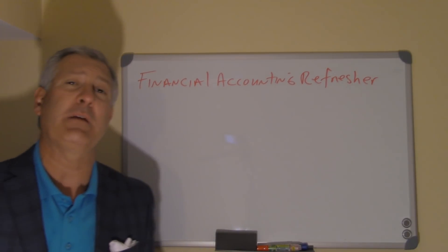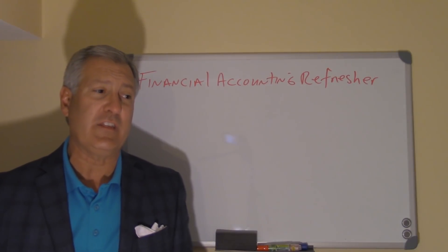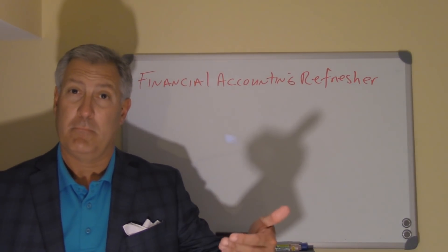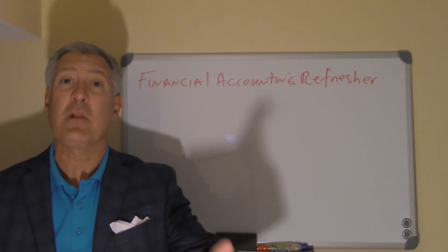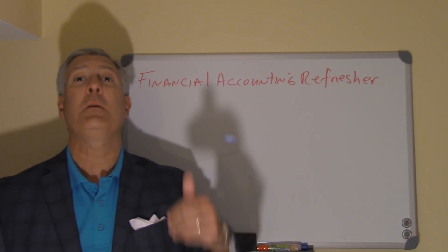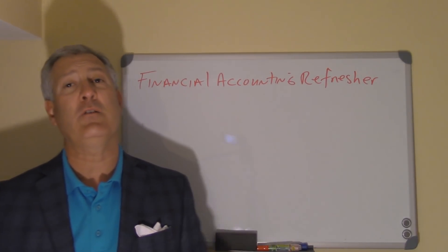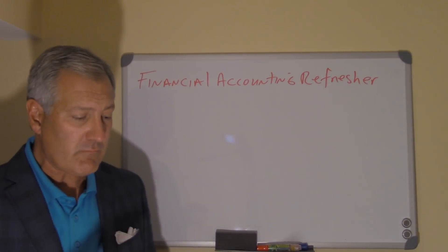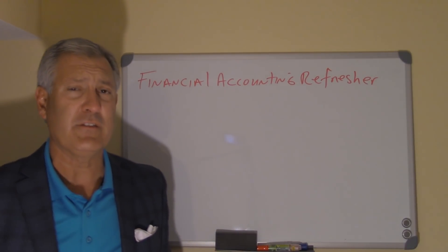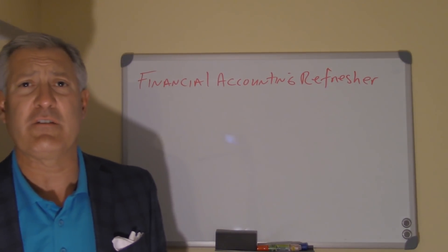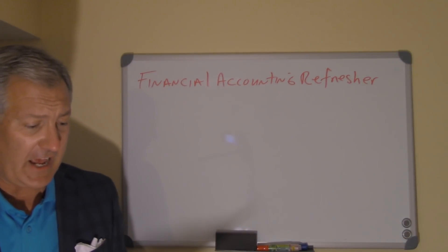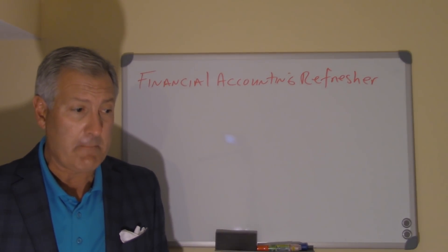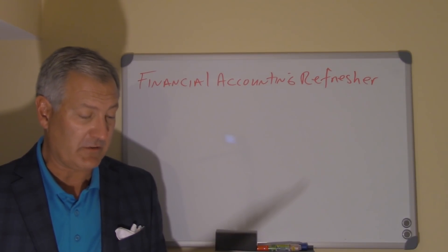The third financial statement is the statement of retained earnings: beginning retained earnings plus net income less dividends paid equals ending retained earnings. And then the statement that we're going to work on for the next several classes is the statement of cash flows. Those are the four major financial statements.